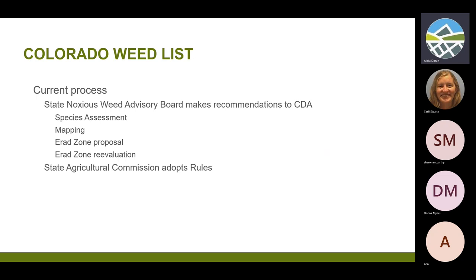The process involves the state noxious weed advisory board making recommendations. They go through a species assessment, and the state's noxious weed program is looking at updating that process to be more scientifically stable. It depends a lot on mapping known populations. They talk about new eradication zone proposals — sometimes they find more of a plant than expected and may redraw the eradication zone lines. Then the CDA makes the recommendation to the State Agricultural Commission, and they're the ones that enact the regulations.